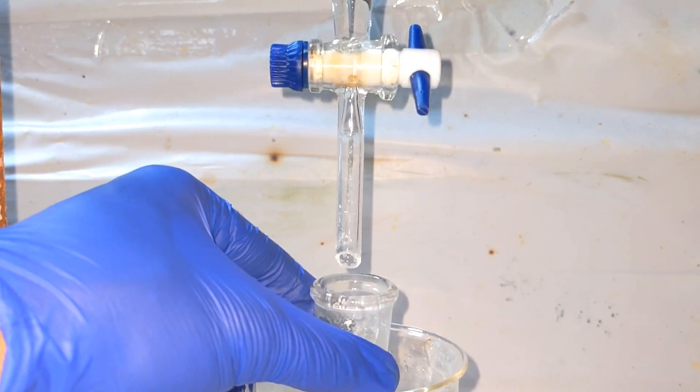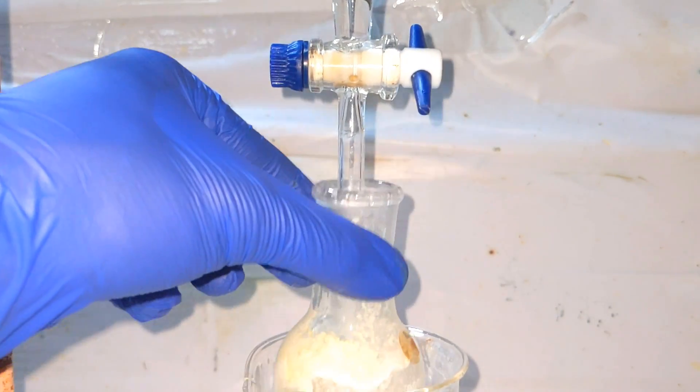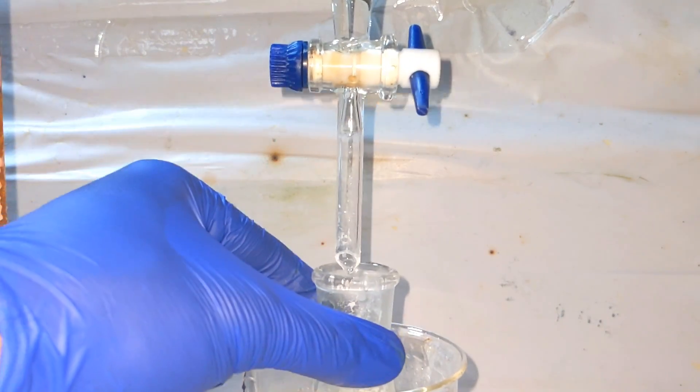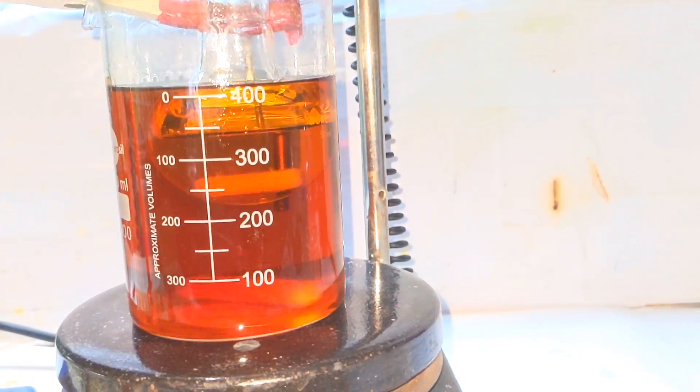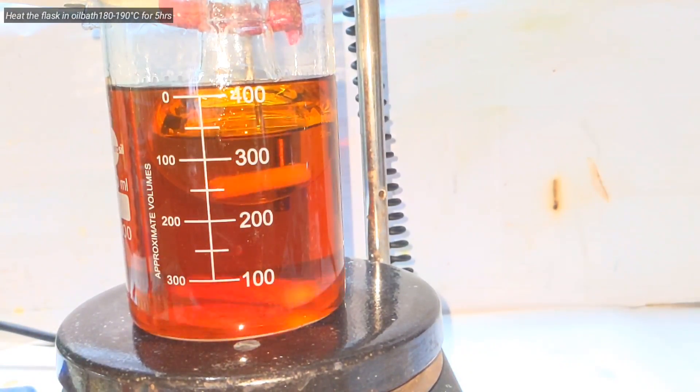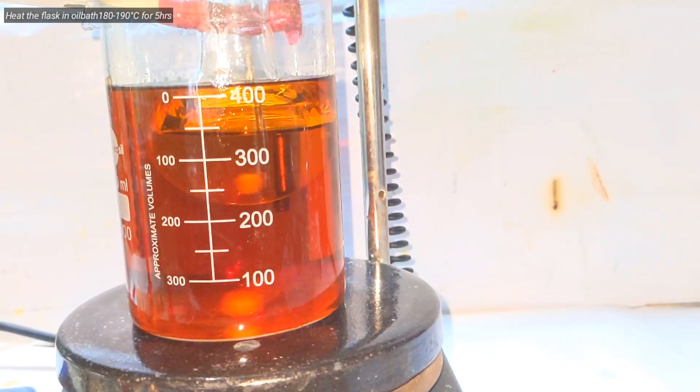Repeat this step until all the sulfuric acid falls into the flask. A stirring bar was placed in the flask and it was placed in an oil bath and heated at 180 to 190 degrees Celsius for five hours.